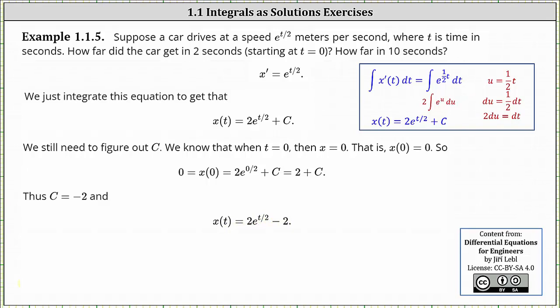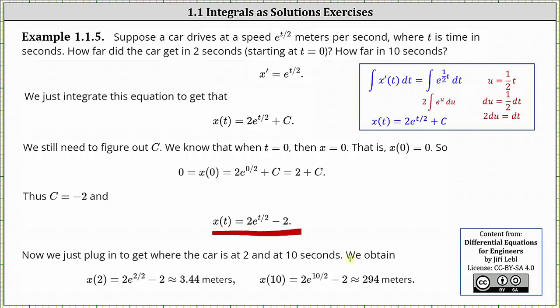Now that we have the particular solution, we can determine the distance traveled after two seconds by determining x of two, and the distance traveled after 10 seconds by determining x of 10. x of two is equal to two times e to the power of two divided by two minus two, or just two e minus two, which is approximately 3.44 meters.